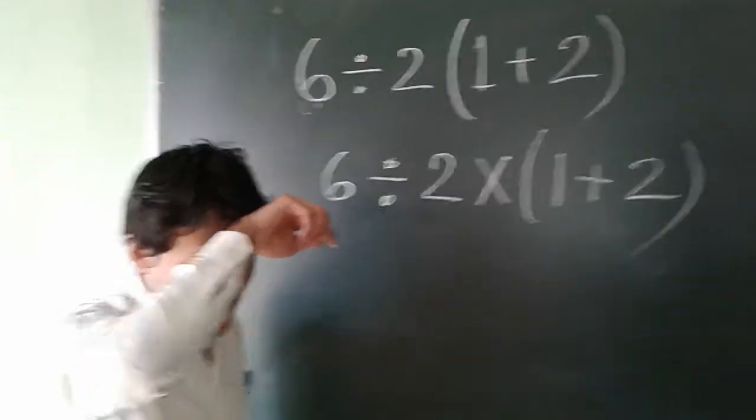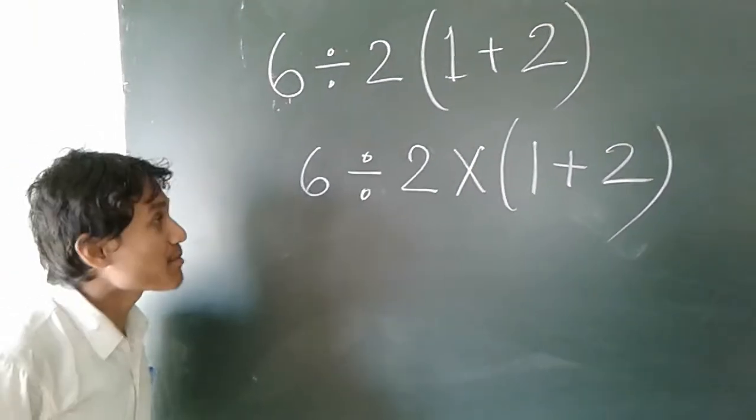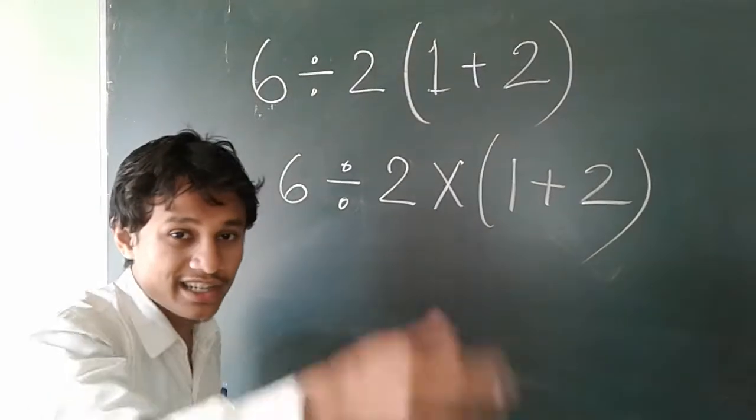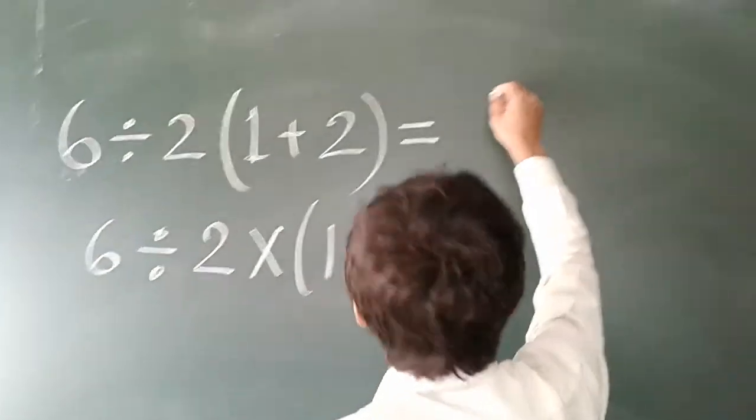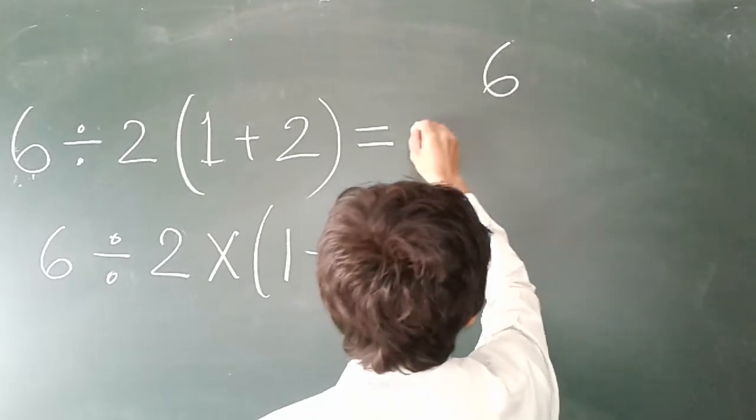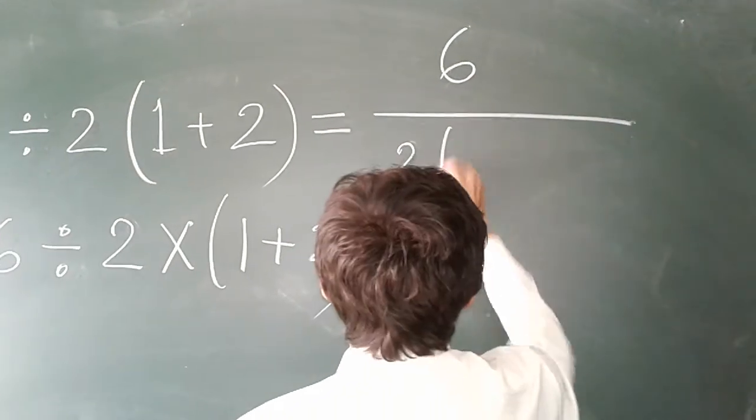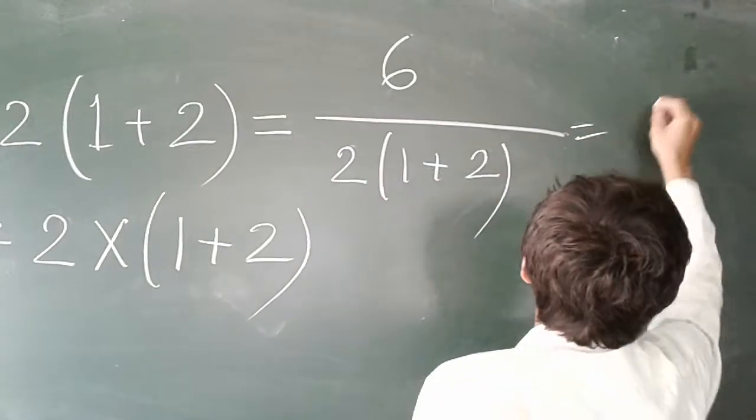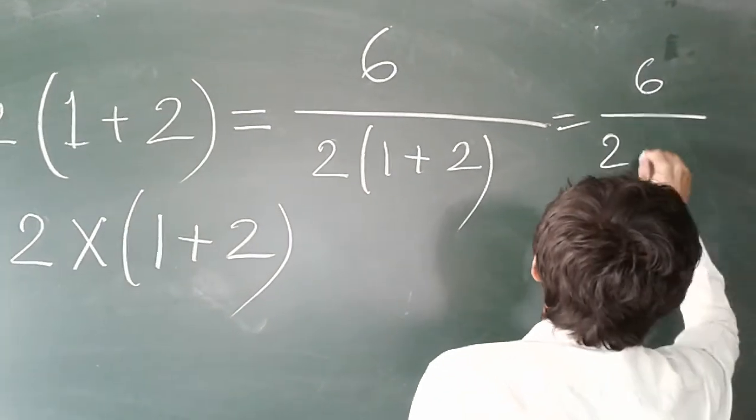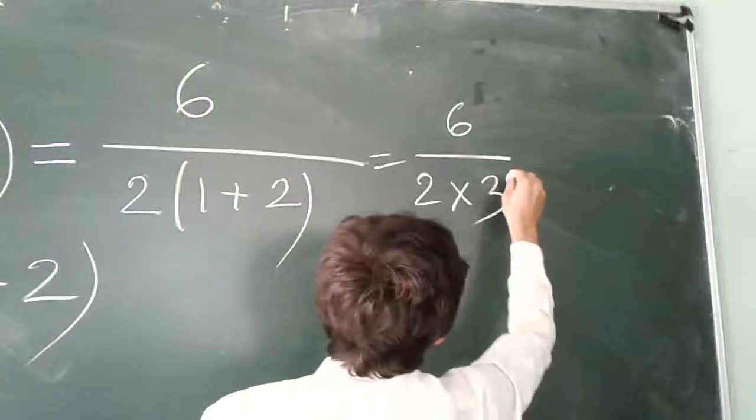If I am clear, now I am extending towards the result. So this result must show this structure: 6 divided by 2 into 1 plus 2, then 6 divided by 2 into 3. That is, finally we achieve the answer 1.